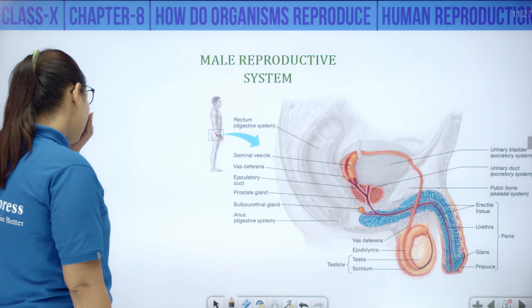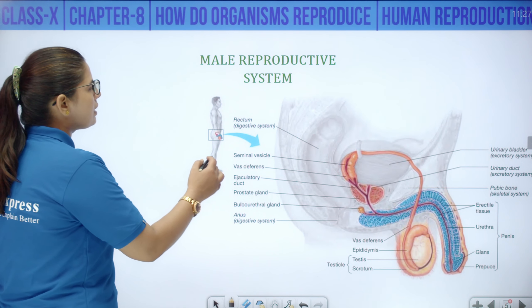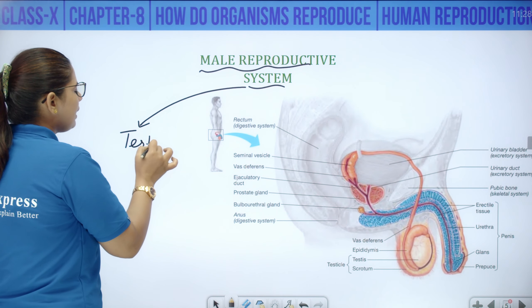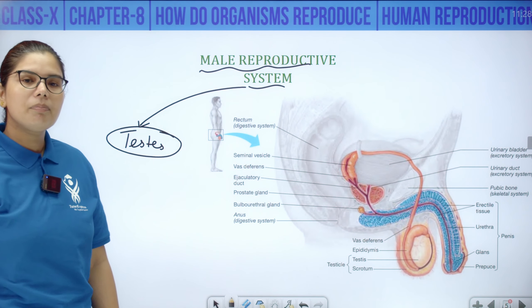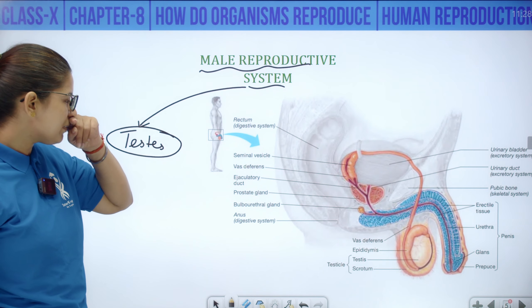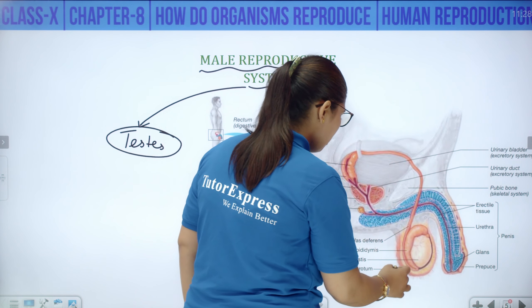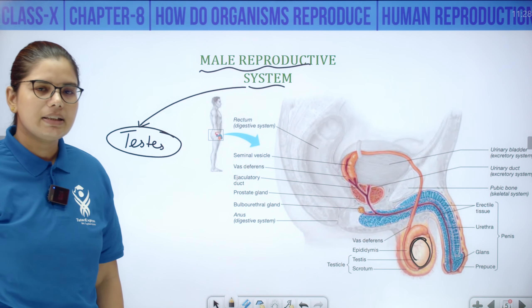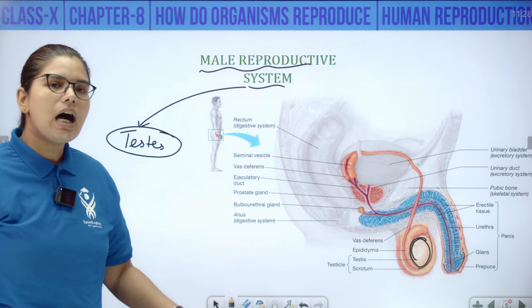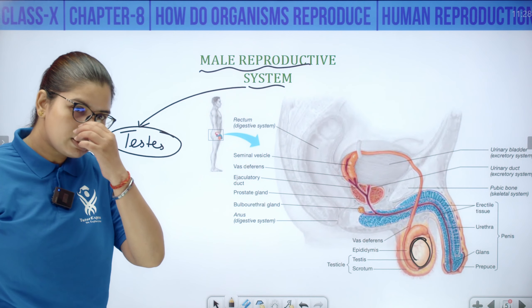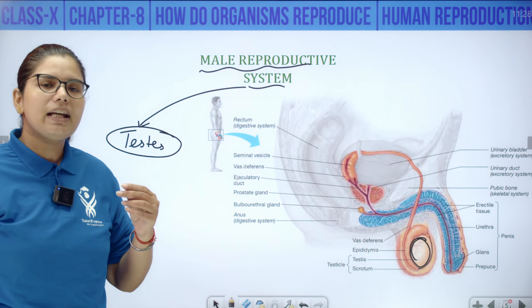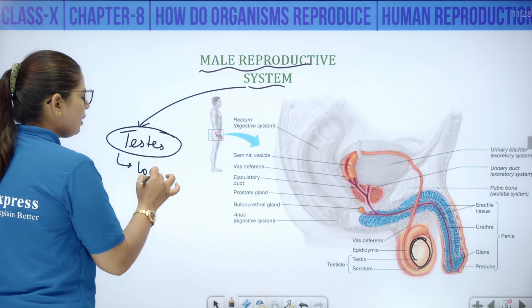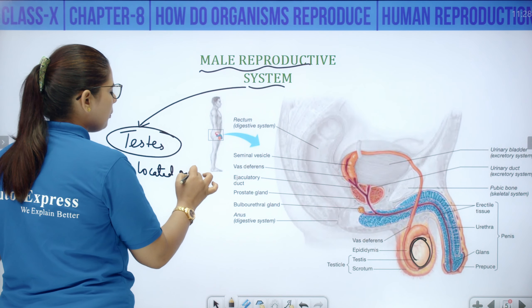Now let us come to the male reproductive system. The main part is the testes — testes is the structure which produces the male gamete. In the male reproductive system, the testes is present outside the body, not inside — not in the abdominal cavity. The testes are located outside the abdominal cavity in the scrotum, a sack-like structure.